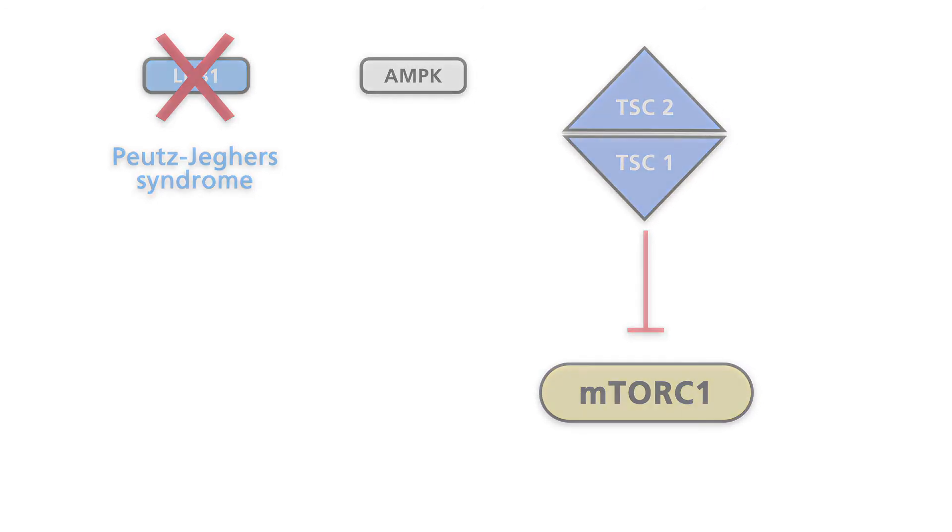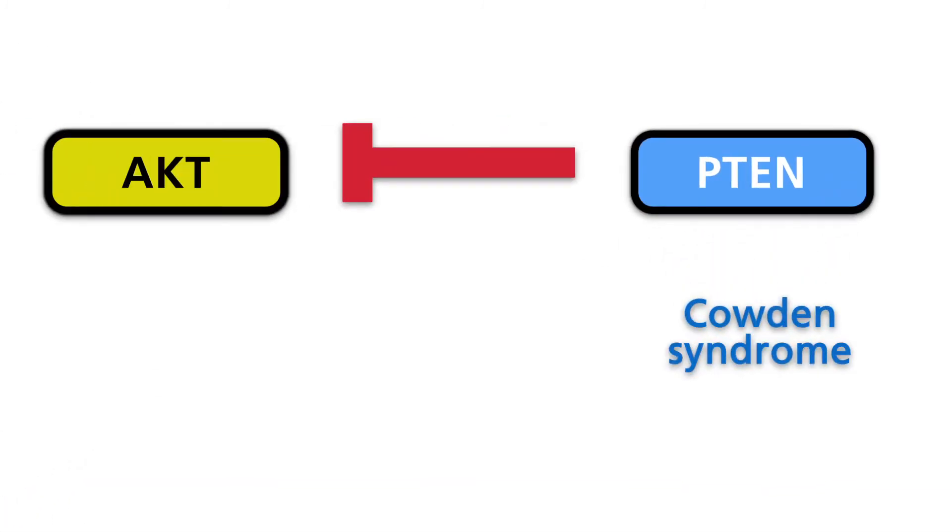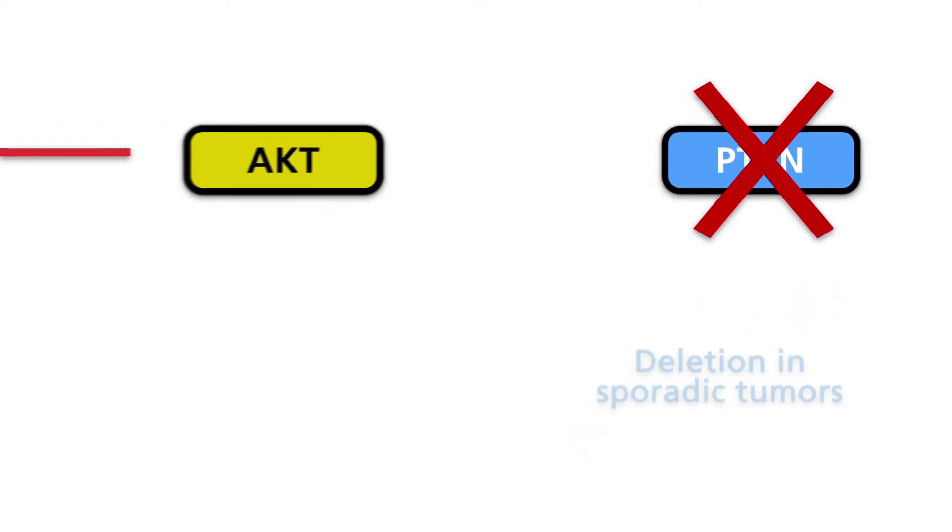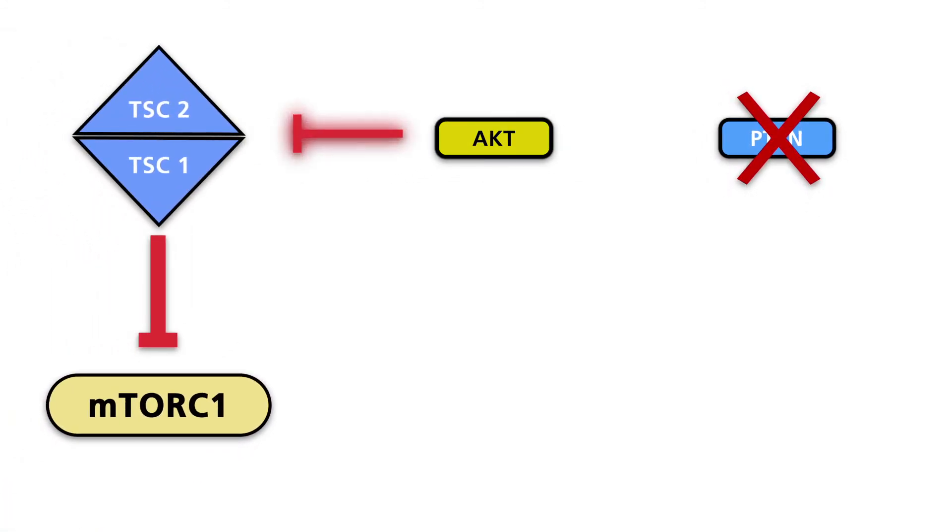The PTEN gene is a tumor-suppressor gene that plays a key role in Cowden syndrome. Patients with Cowden syndrome are also affected by multiple hamartomas. One or both copies of the PTEN gene are inactivated in various spontaneous carcinomas. Reduction or cessation of PTEN activity leads to increased activity of AKT. This blocks the inhibitory activity of the TSC1-TSC2 complex on mTOR complex 1 activity.